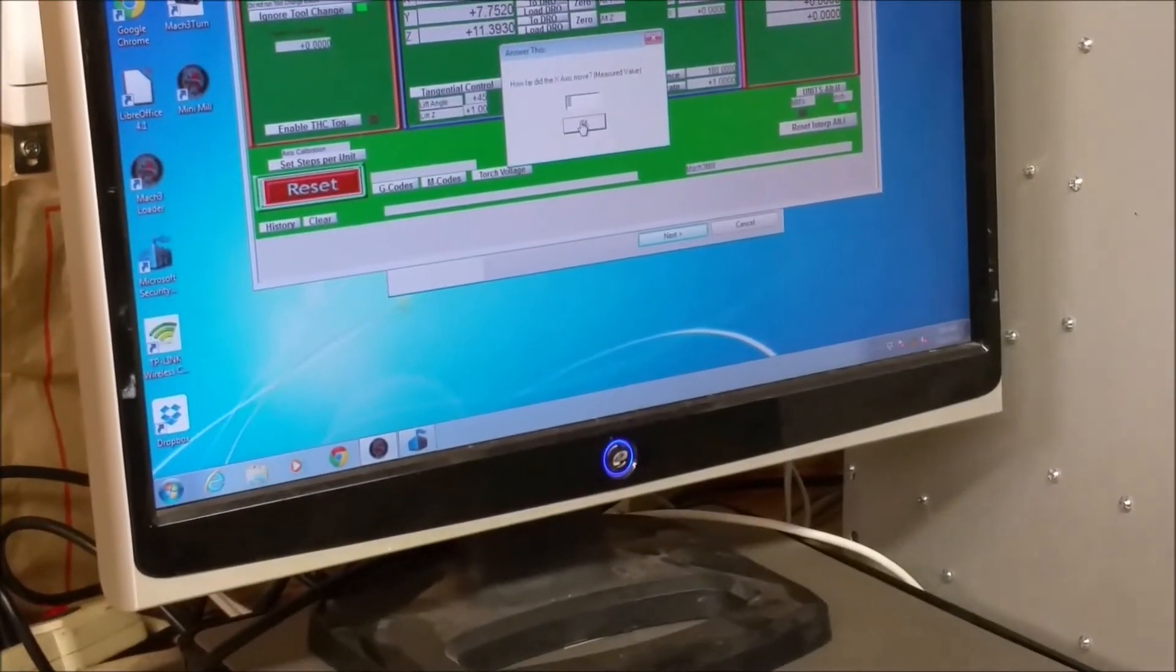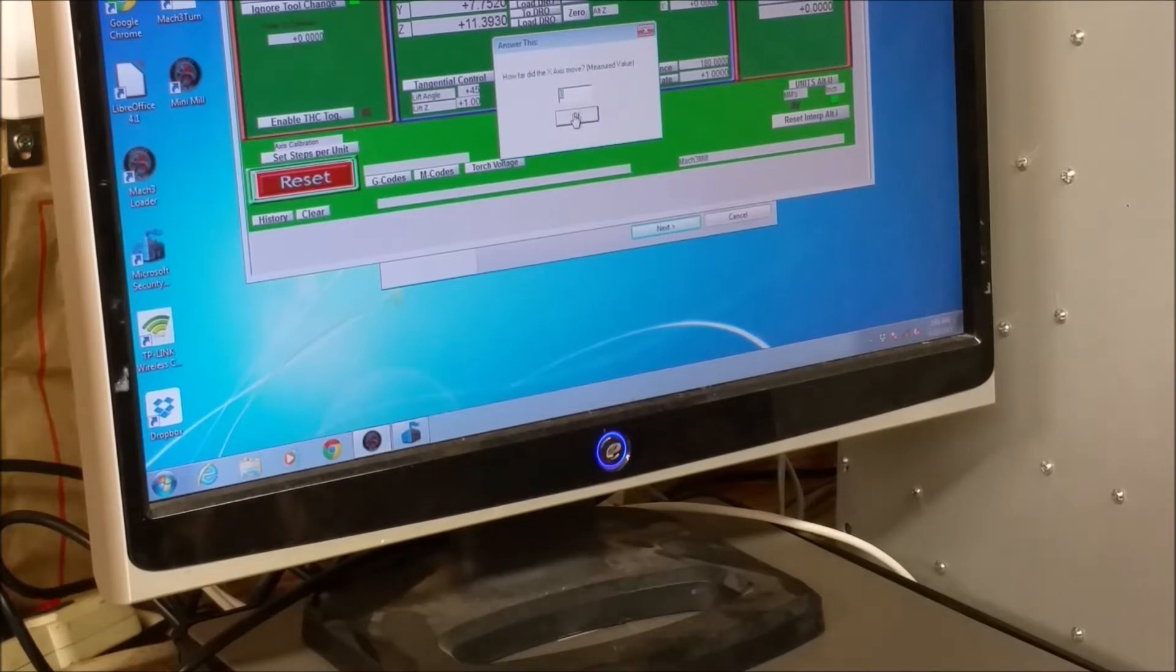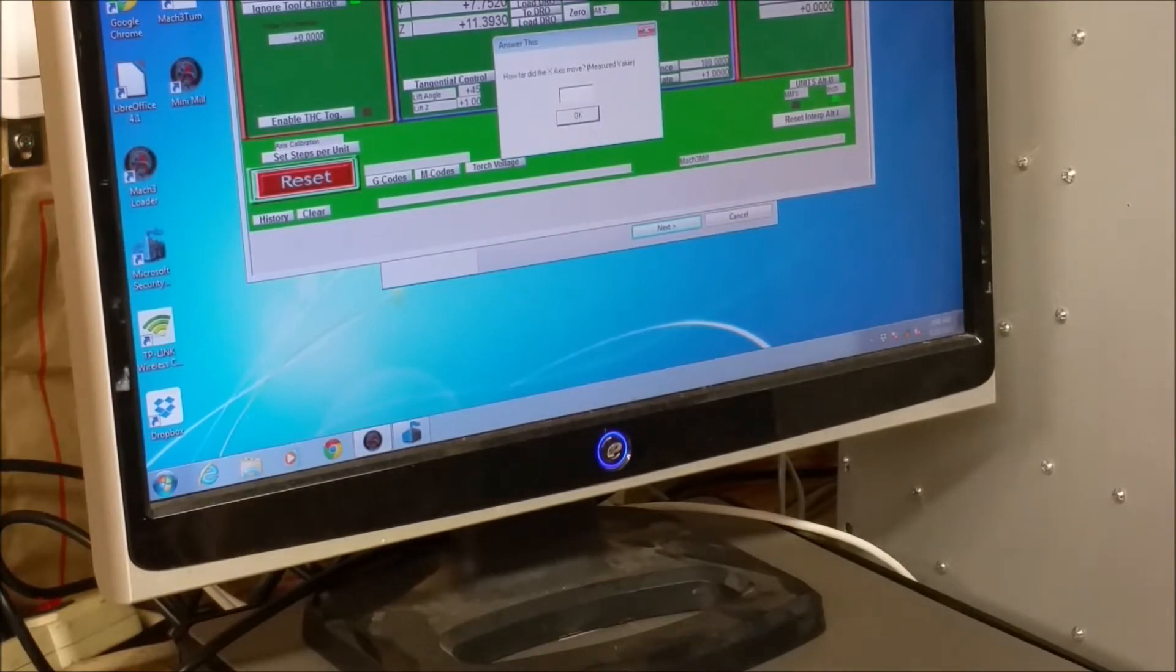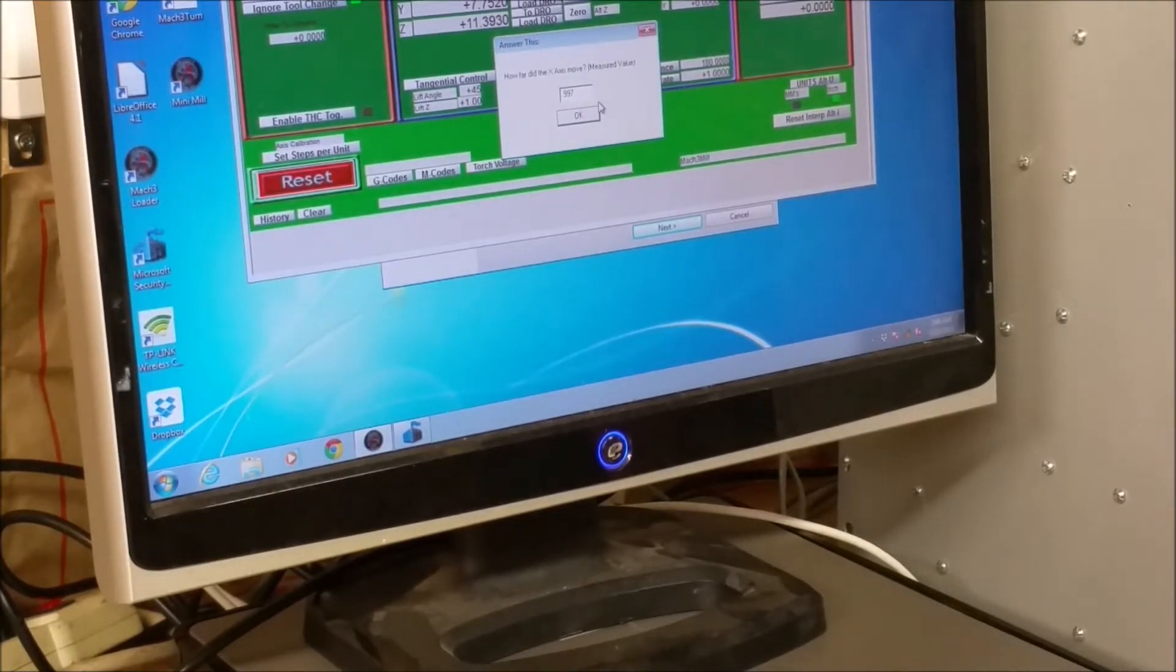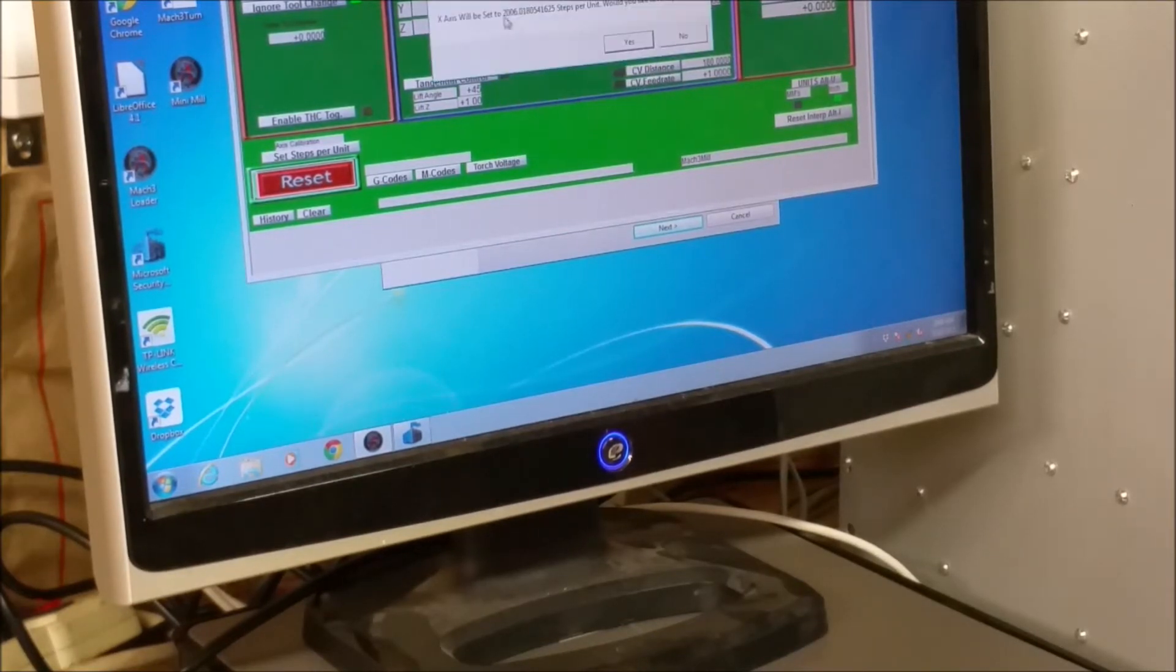In here we're going to enter 0.997 because it's three thou short. And we'll click OK. And it's going to change the setting to 2006 point a bunch of other numbers. Would you like to accept? I'll select yes, and it's been set.